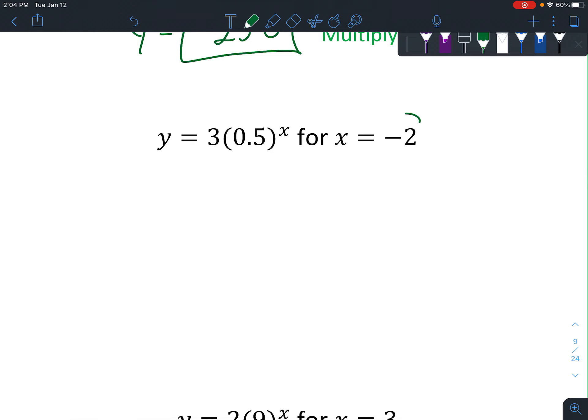Okay, so on this one, x is negative 2. And once again, just plug it straight in. So we're going to get y equals 3 times 0.5 to the negative 2.